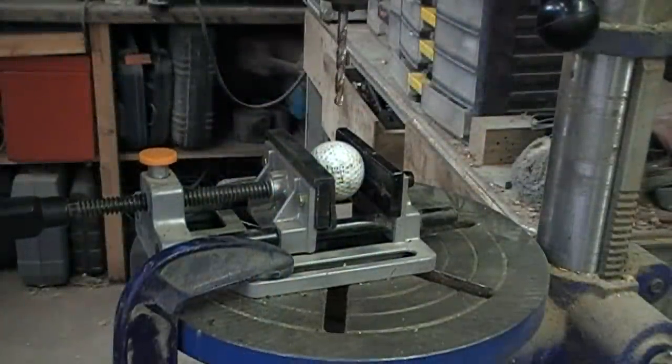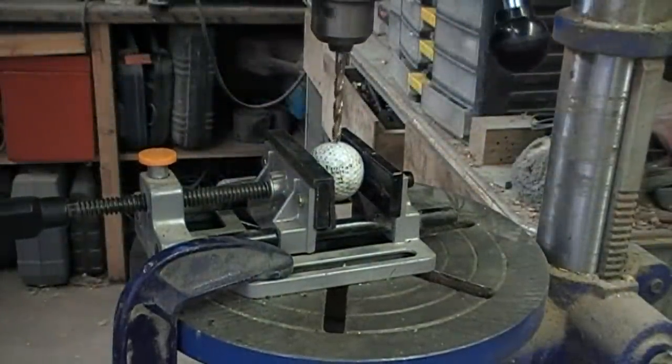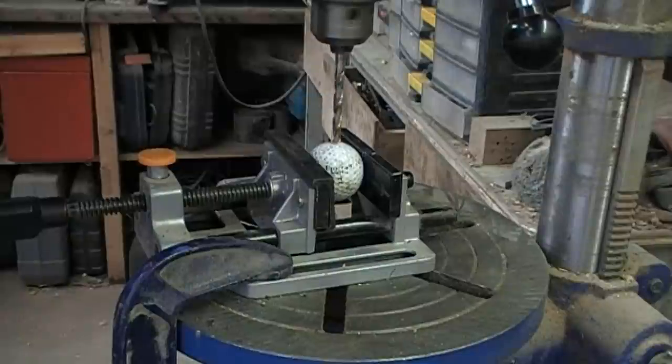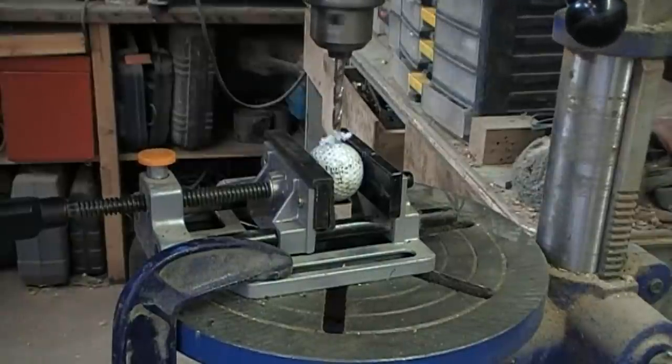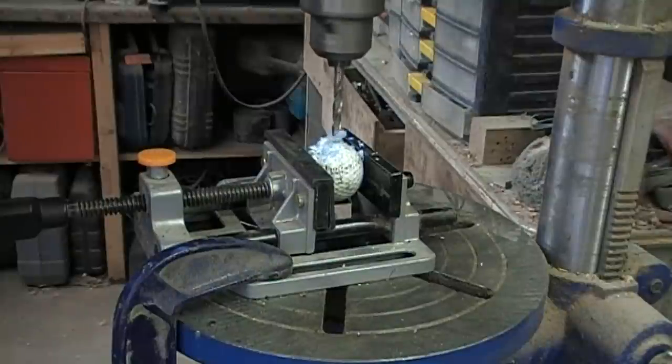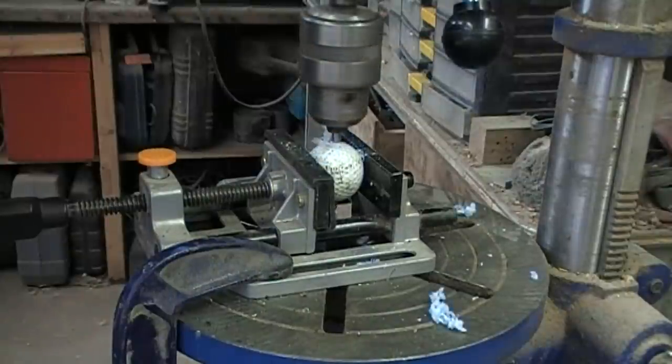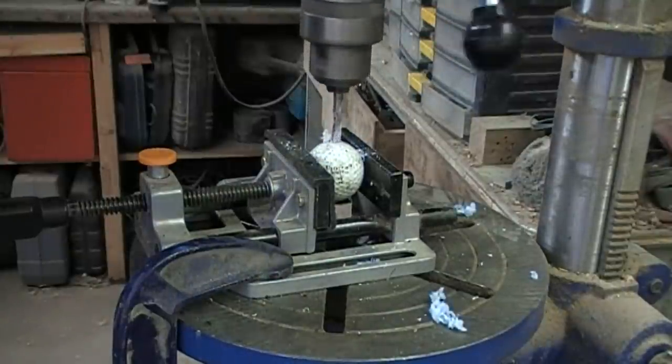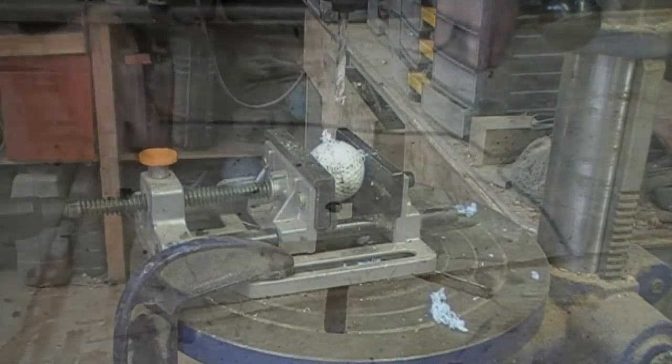Now take the golf ball and bore a 6.5mm to 7mm hole in it. You're best to use a solid golf ball if you can get one. The first ball I used had a liquid center in it which ended up an absolute mess. It's almost impossible to bore a clean hole through one with a liquid center.